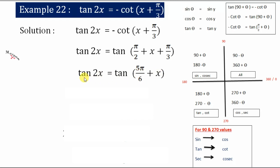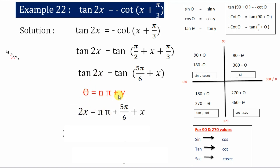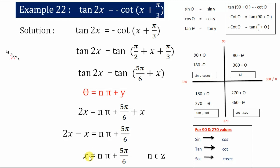For tan θ = tan y, we have the relation θ = nπ + y. So: 2x = nπ + (5π/6 + x). Taking x to the other side: 2x - x = nπ + 5π/6. Therefore x = nπ + 5π/6, where n belongs to integers. This is the general solution of the given equation.